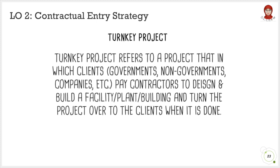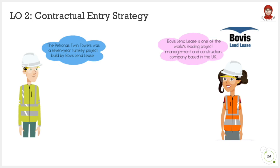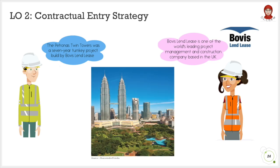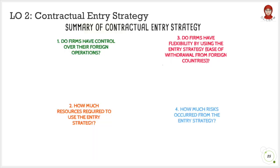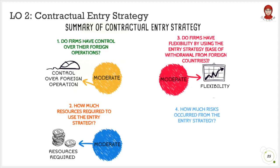An example of a company involved in a turnkey project is Bowie's Land Lease, one of the world-leading project management and construction companies based in the UK. Our iconic Petronas Twin Towers is an example of a turnkey project built by this company. To sum up, all four aspects — control over foreign operation, resources required, flexibility, and risk — are moderate under the contractual entry strategy, because this strategy is governed by an agreement between two or more parties, giving each party their own degree of control, resources, flexibility, and risk.